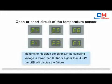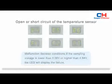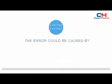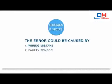Malfunction decision conditions: if the sampling voltage is lower than 0.06 volts or higher than 4.94 volts, the LED will display the failure. The error could be caused by: 1. Wiring mistake. 2. Faulty sensor. 3. Faulty PCB.